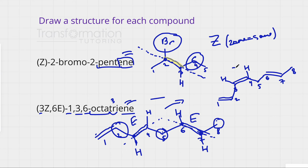Now the two priority groups on the C3-C4 double bond are on the same side, making it Z. The C6-C7 double bond remains E. This is my final structure for 3Z,6E-1,3,6-octatriene. Let me know if you found this video helpful.